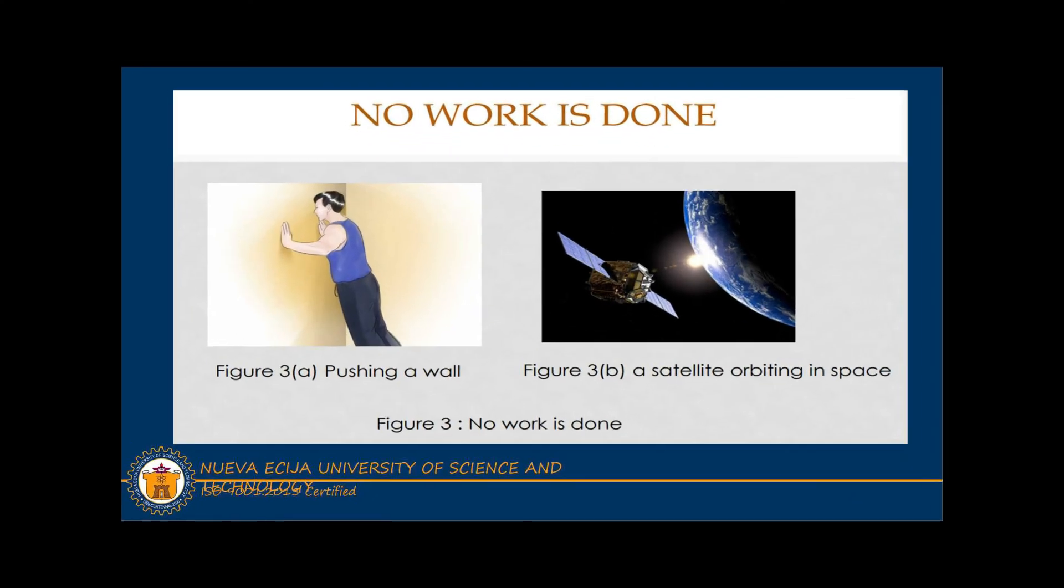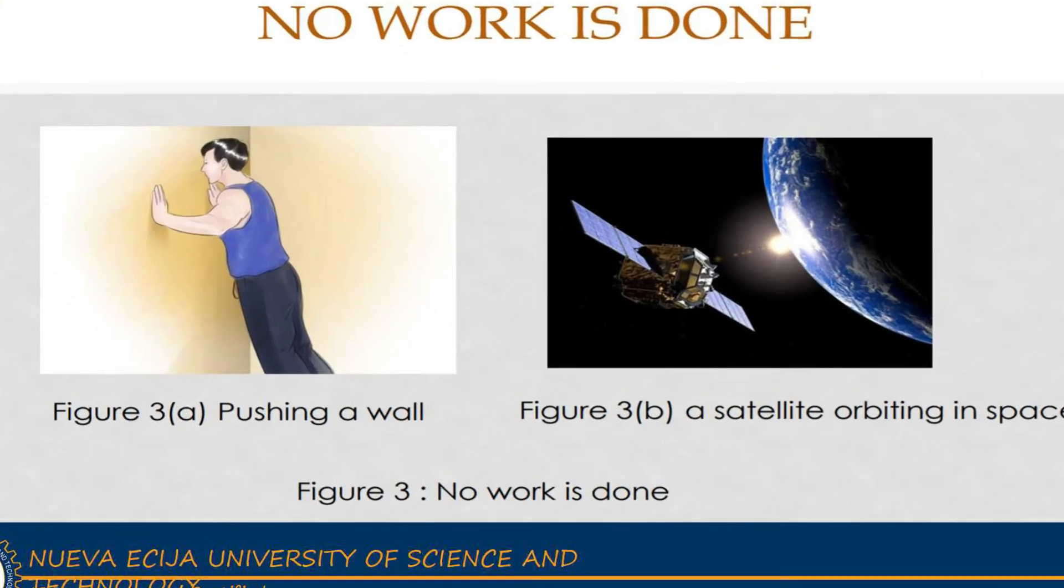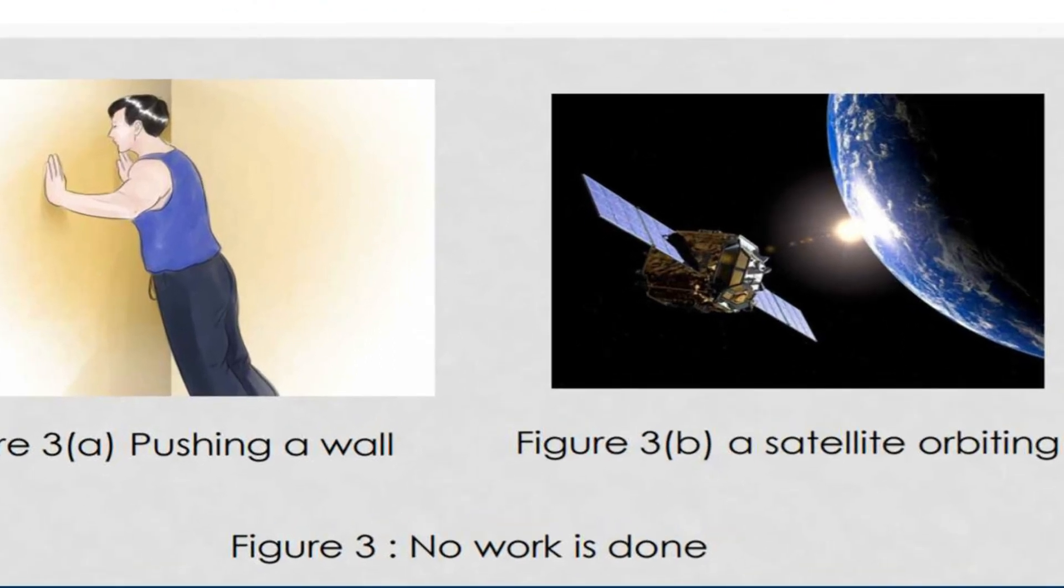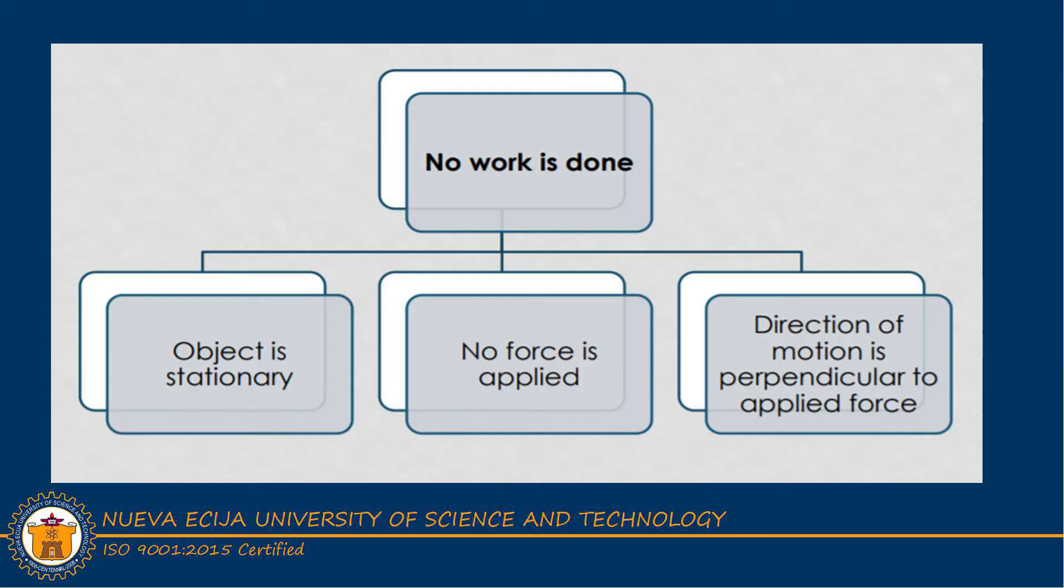Here is the example showing no work is done: pushing a wall and a satellite orbiting in space. Remember, no work is done if the object is stationary, no force is applied, and the direction of motion is perpendicular to the applied force.